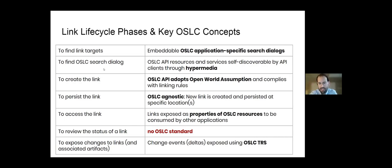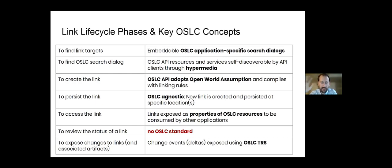I didn't cover everything in this short time. One important note: link status is extremely relevant, because if one end of a link is modified or deleted, the link may become irrelevant or no longer have any meaning — it needs to be flagged as invalid or suspect. I don't think we have an OSLC standard to describe link status. Within Jazz there is a standard way to do this, but it's not an official OSLC standard. Please tell me after my talk if I'm wrong.